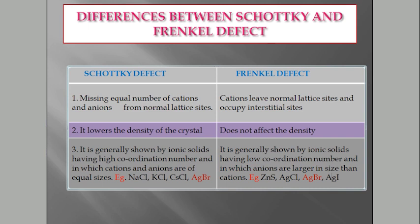Differences between Schottky and Frenkel defects: In Schottky defect, equal numbers of cations and anions are missing from normal lattice sites. In Frenkel defect, cations leave their lattice sites and occupy interstitial sites. Schottky defect lowers the density of the crystal, but Frenkel defect does not affect the density. Schottky defect is shown by ionic solids with high coordination number where cations and anions are of equal size. Frenkel defect is shown by ionic solids with low coordination number where anions are larger in size than cations.